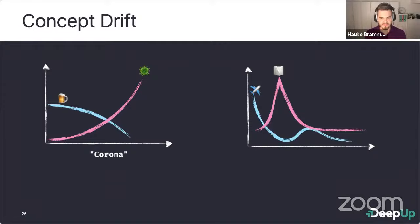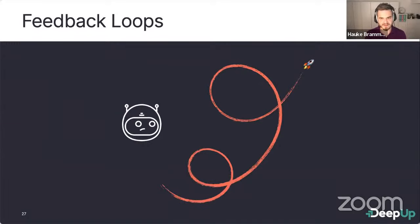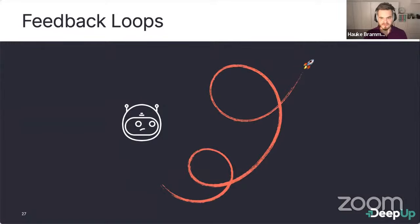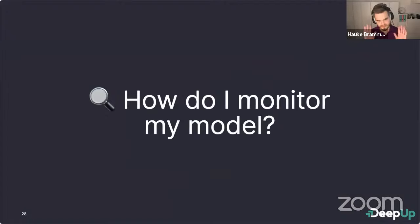Concept drift is especially important to watch in recommender systems. Another problem in recommender systems is a feedback loop: we recommend products, capture what users bought, improve the model with that data, and can get into a spiral — the recommended product is bought more, so it's recommended more, then bought more. We can counter this by recording the position at which purchased products were displayed and weighting that as a feature in our model.